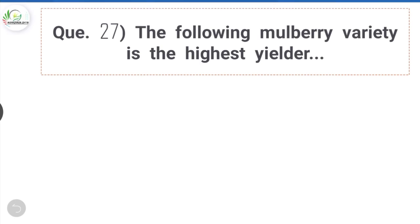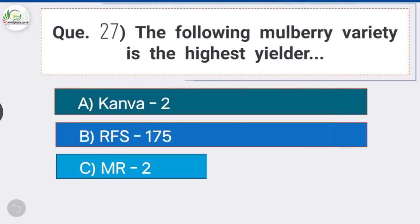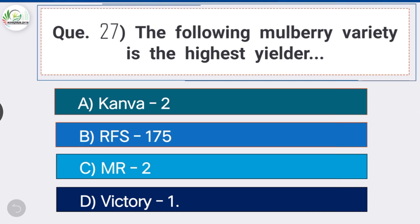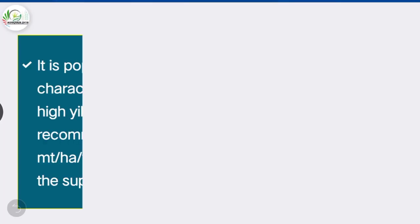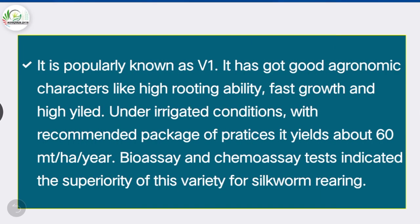Question number twenty-seven: the following mulberry variety is the highest yielder — option D is the correct answer — Victory-1, popularly known as V1. It has good agronomic characters like high rooting ability, fast growth and high yield under irrigated conditions. With recommended practices it yields about 60 metric tonnes per hectare per year, and bioassay and chemoassay tests indicated its superiority for silkworm rearing.